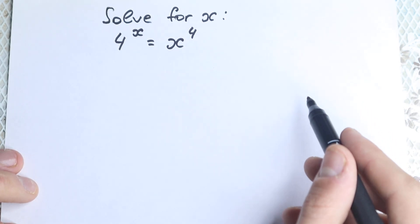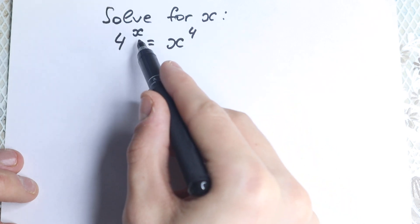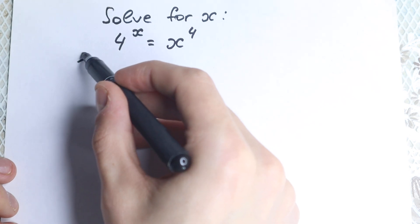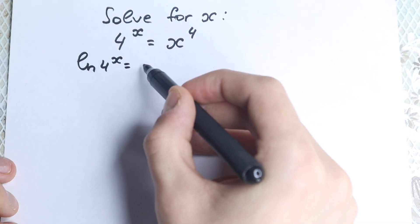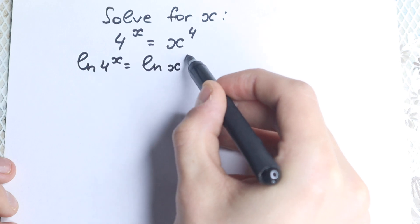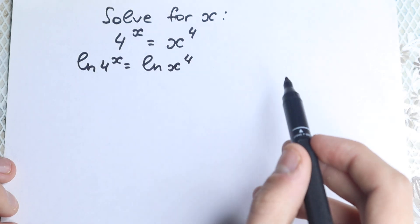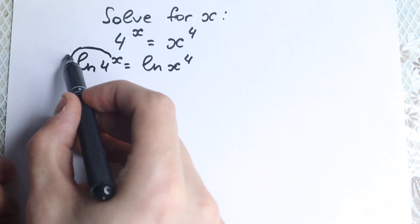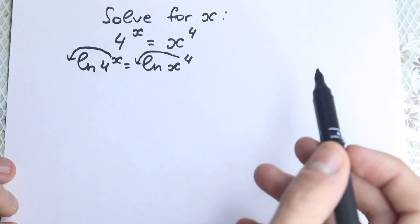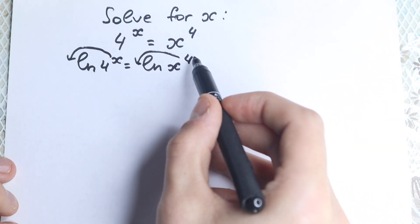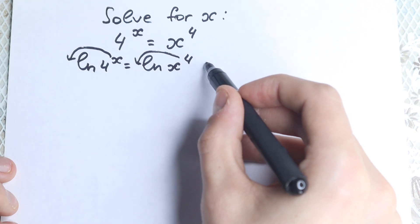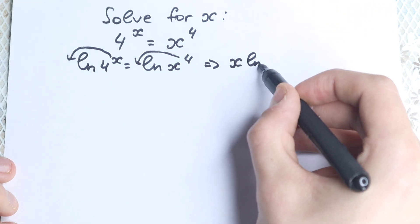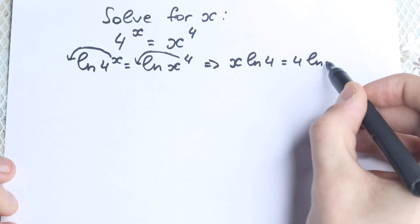First of all, since we have exponents and powers, it's really great to take the log on both sides. If we take the natural log on both sides, we have natural log of 4^x equal to natural log of x^4. The exponents jump out in front of the log, so we get x·ln(4) equal to 4·ln(x).